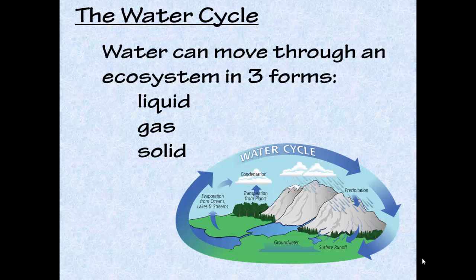So we're going to start with the water cycle. Water is going to move through an ecosystem in three forms — the three states of matter: liquid, gas, and solid. There is a fourth state of matter called plasma, but we're not going to talk about that because that's just crazy pants, and your physics teacher can talk to you about that.